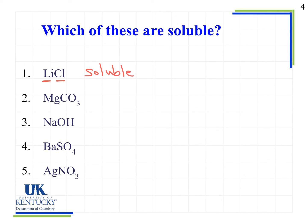Number two: magnesium carbonate — soluble or insoluble? This one will actually be insoluble because carbonates are insoluble in water and there are no exceptions to that rule, so it doesn't matter what the cation is. Number three: sodium hydroxide — soluble or insoluble? This one will actually be soluble because it has the sodium ion. Anytime we see lithium, sodium, potassium, or ammonium cations present in an ionic compound, we know that it will be soluble in water.